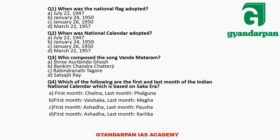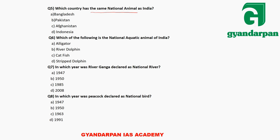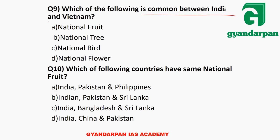Homework questions: When was the National Flag adopted? When was the National Calendar adopted? Who composed the song Vande Mataram? Which are the first and last months of the Indian National Calendar based on the Saka era? Which country has the same national animal as India? What is the national aquatic animal of India? In which year was the Ganga declared as national river? In which year was the peacock declared as national bird? What is common between India and Vietnam? Which countries have the same national fruit?